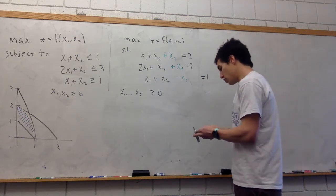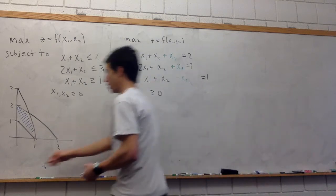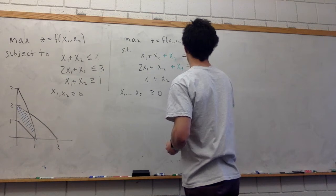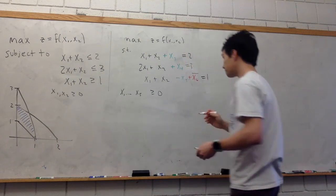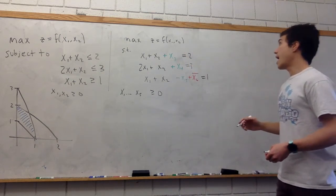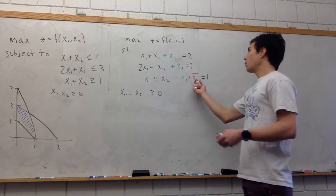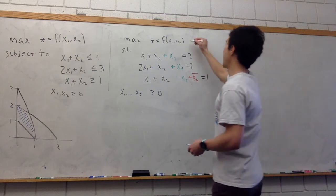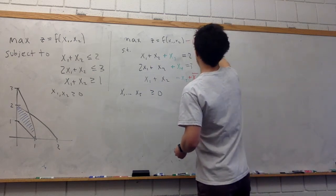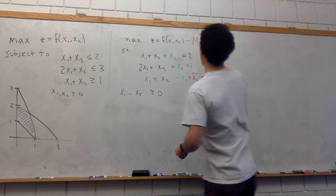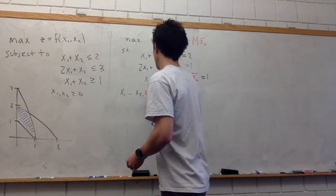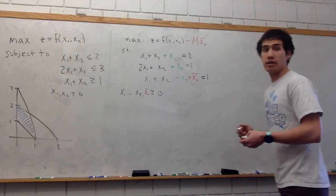So we're going to introduce a new variable. I'll call it x6 bar. And what we want is that, in the end, we want this variable to be 0. So we'll add a big penalty here if this variable is ever non-zero. So we'll require that this is non-negative as well.